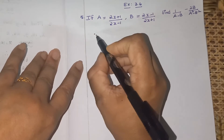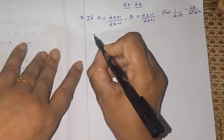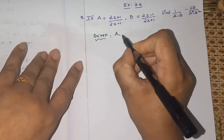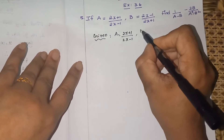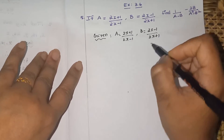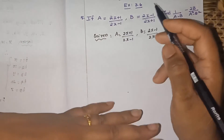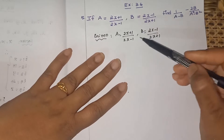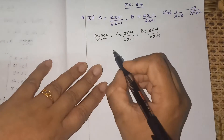So what is given and what we have to find. Given: A = (2x+1)/(2x-1). Carefully write the data from the question paper — please don't change plus into minus, many of you make that mistake. B = (2x-1)/(2x+1). So now I am going to simplify.